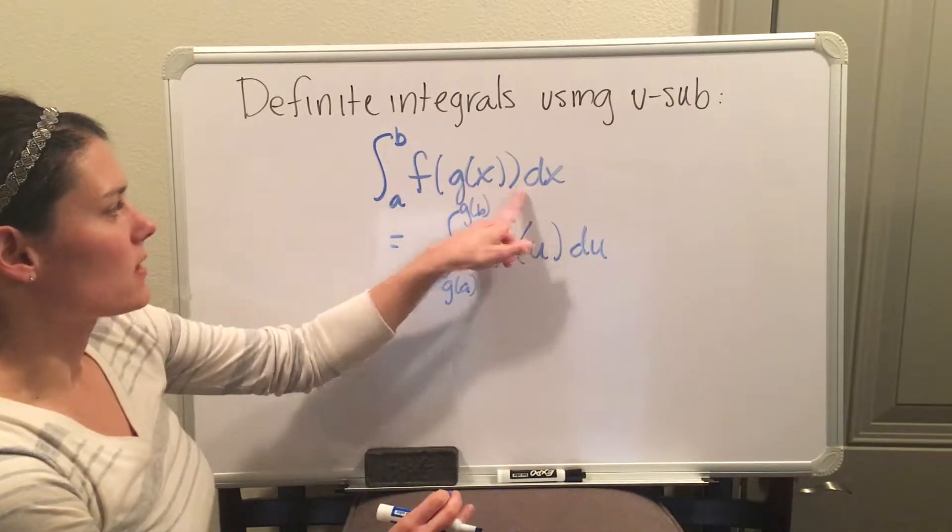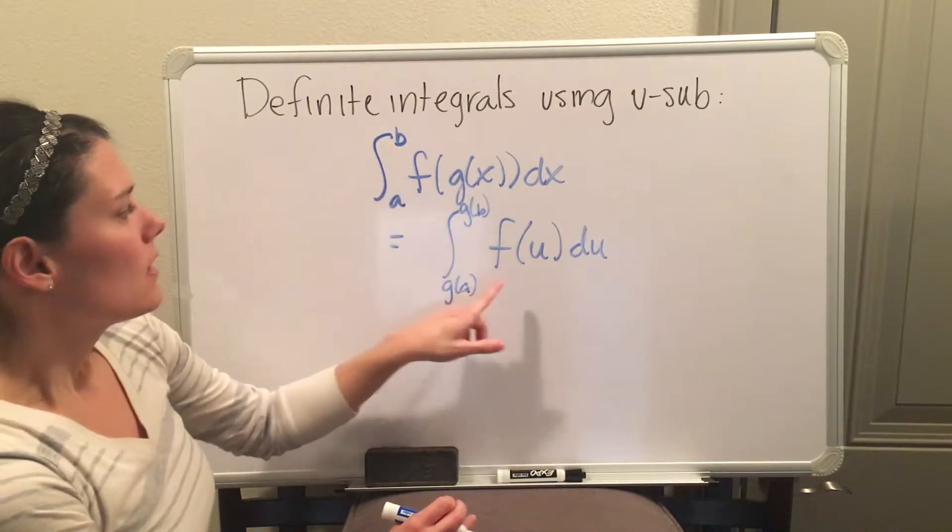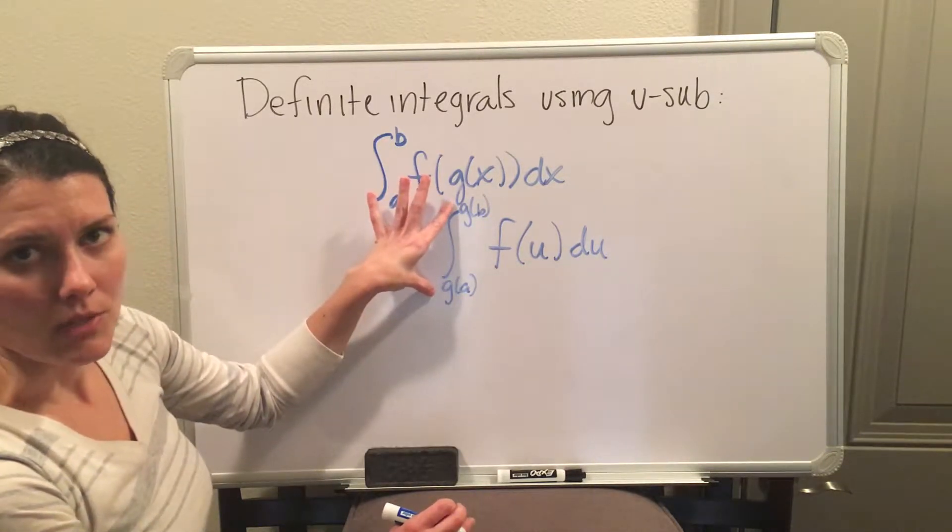These are all in terms of x's, including the interval from a to b, which are x values. So if we change everything to u's, we also have to change our a to b in terms of u as well.